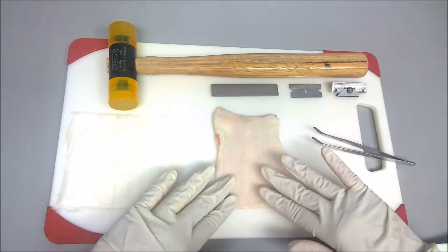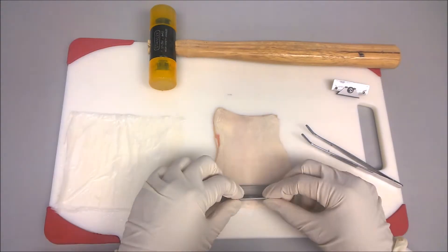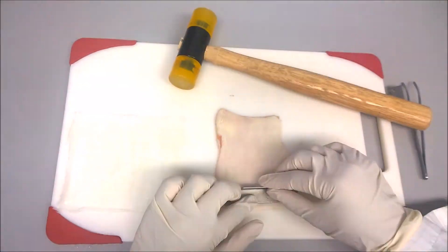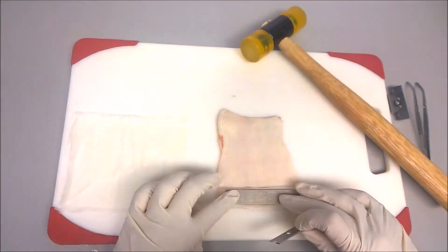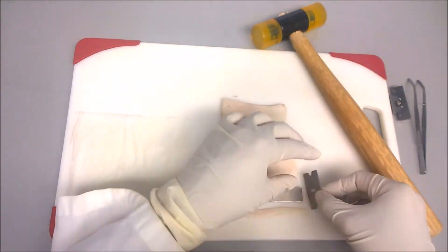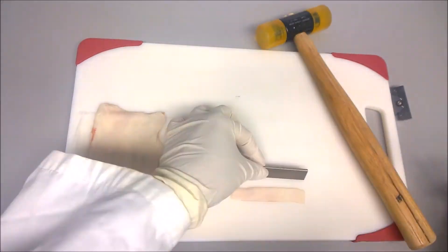Place the skin on the cutting board. Using the cutting template, cut a rectangular section of skin by firmly holding the razor blade while using the mallet.